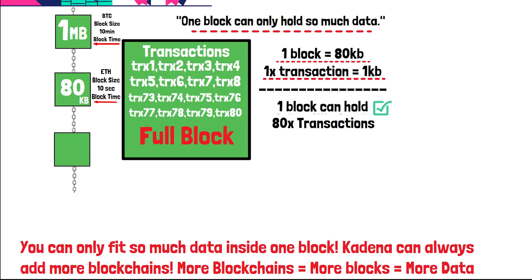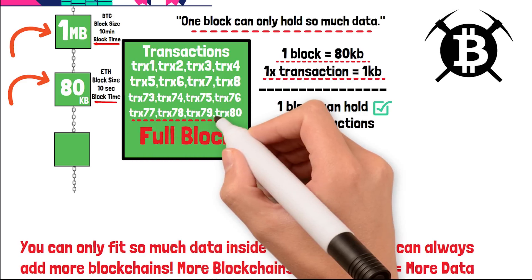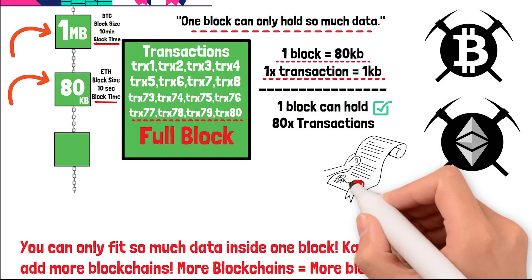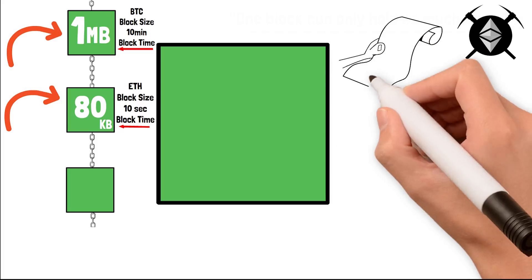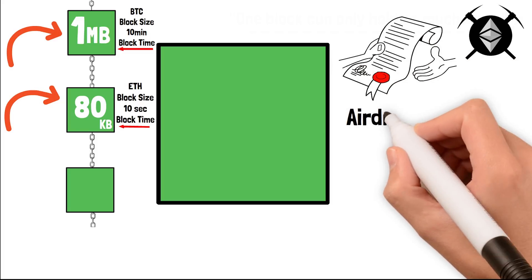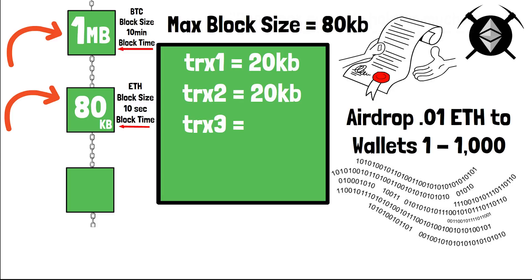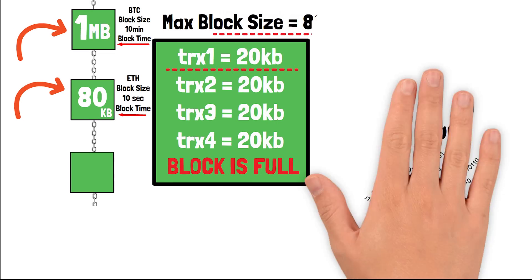A single blockchain will always hit scaling limitations because no matter how hard you try, you only have one block and there is only so much data you can fit into each block. On Bitcoin, every block is just transactions that are very similar in size. In contrast, Ethereum has smart contracts — for example, a smart contract that airdrops 0.01 ETH to a thousand different wallet addresses could be 20 KB, meaning a block might only hold four transactions.